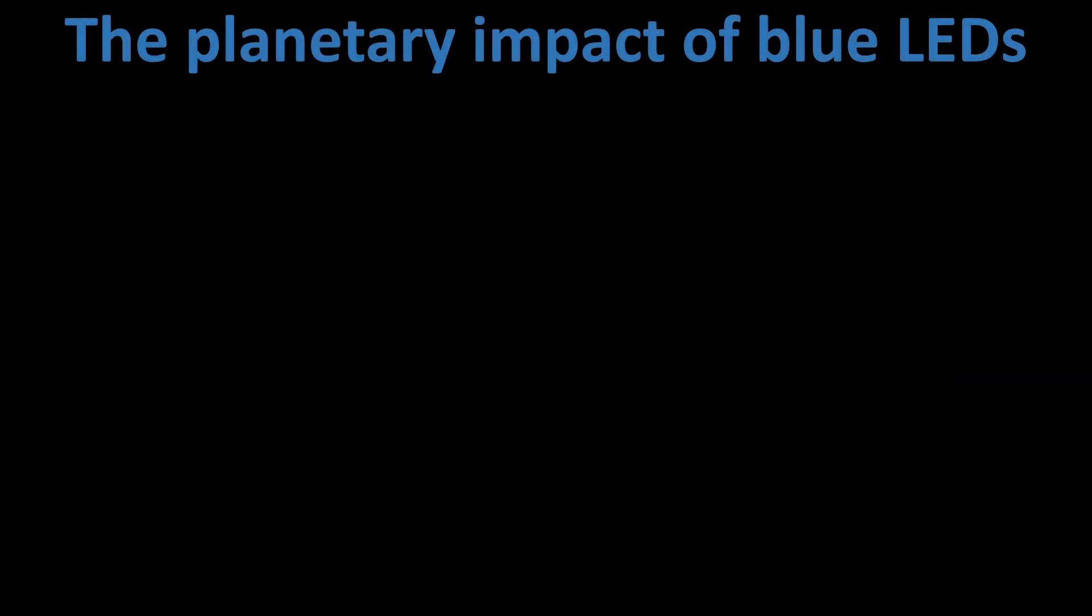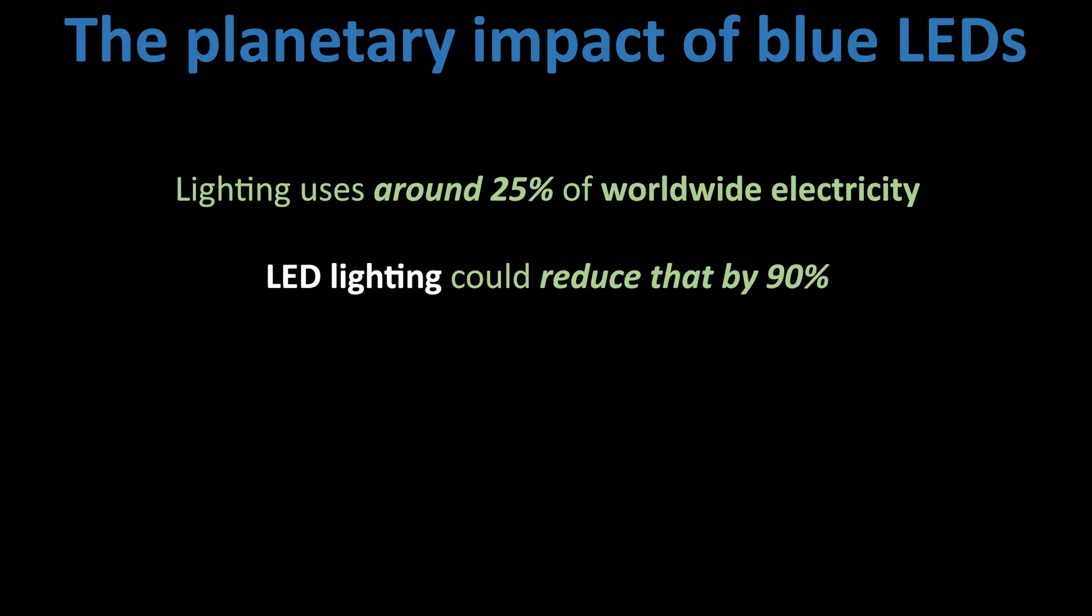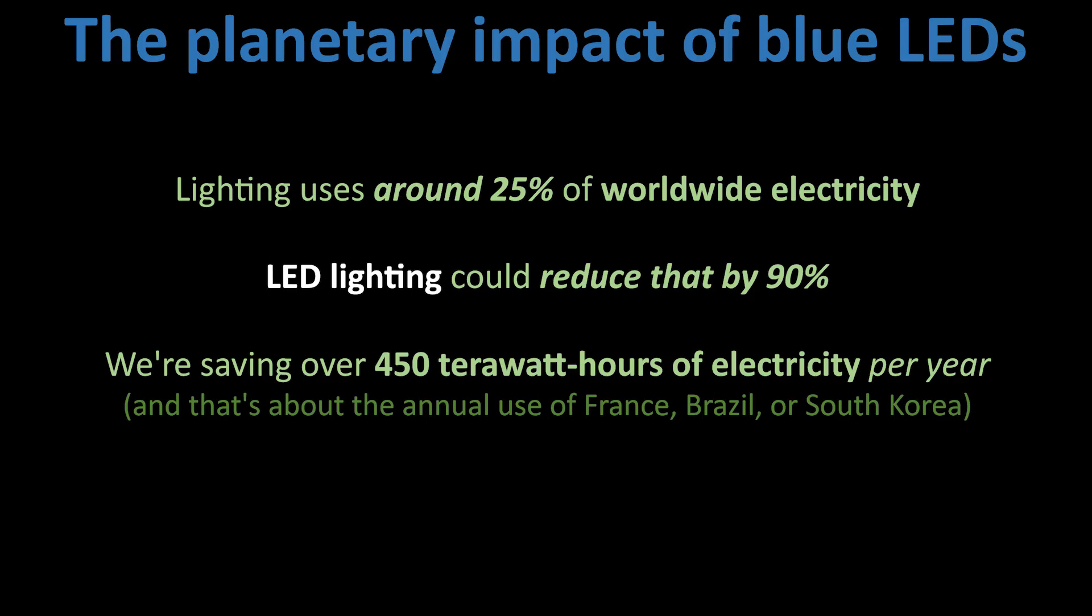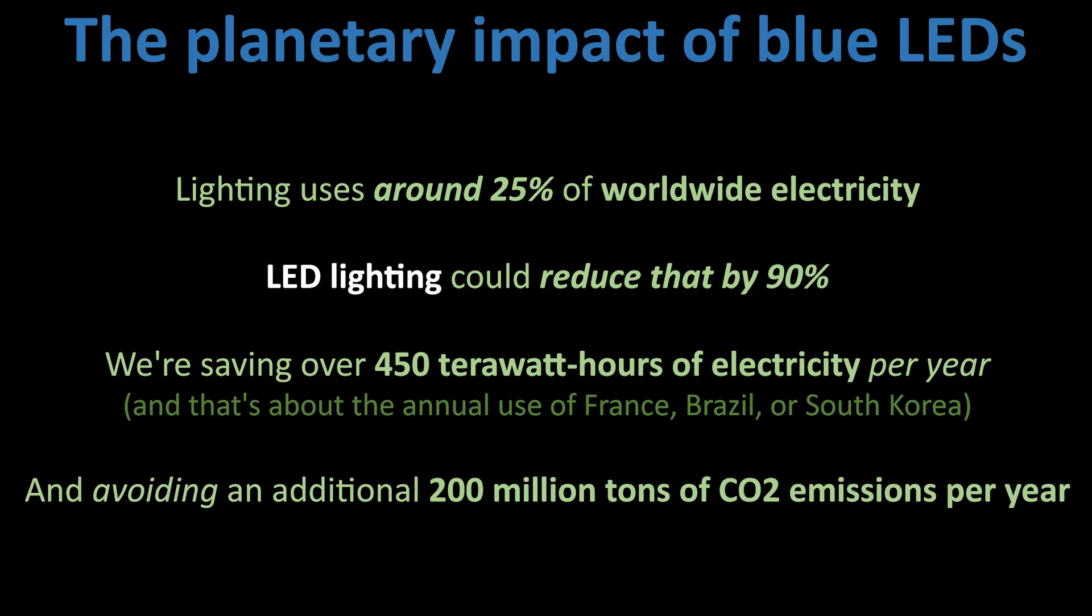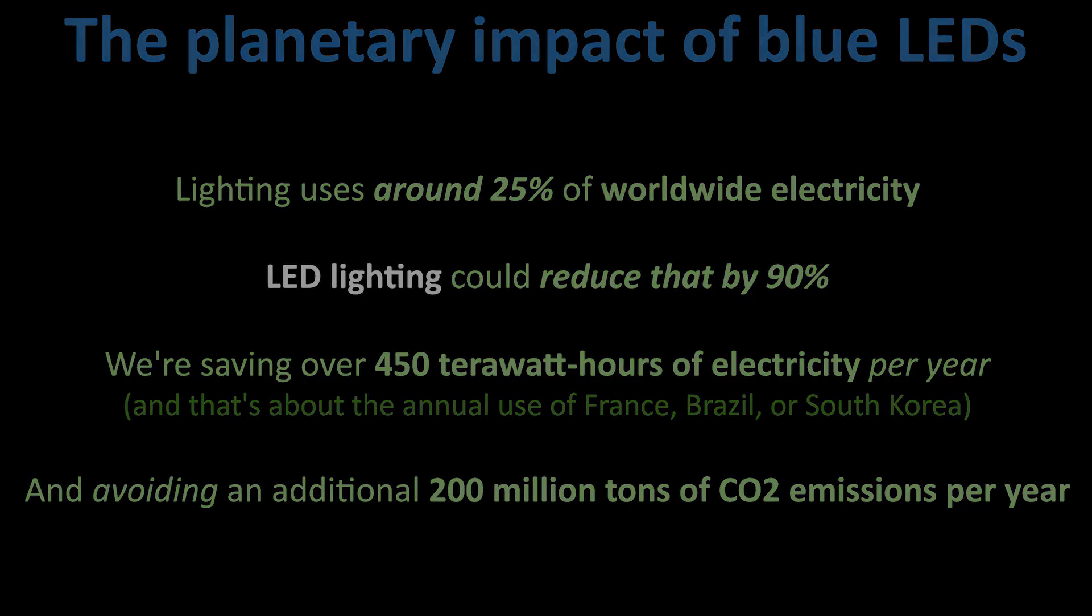In case you're wondering why their work merited a Nobel Prize, the committee noted that lighting consumes up to a quarter of worldwide electricity use, and that LED lighting could reduce that by 90%. That's not just a scientific breakthrough. It's an invention that's reshaped global energy use, saving over 450 terawatt hours of electricity per year and avoiding an additional 200 million tons of CO2 emissions per year. Amazing.